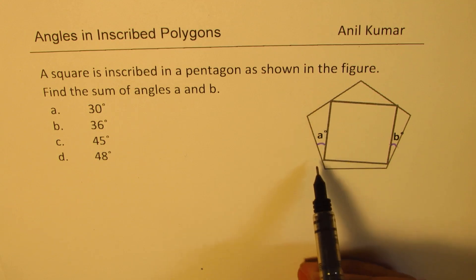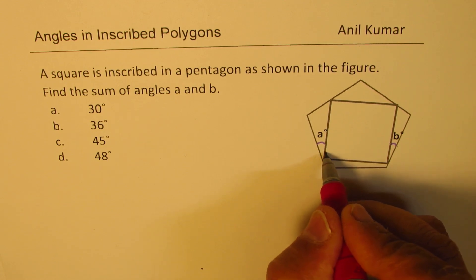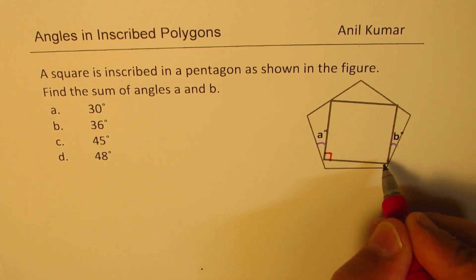Now to begin with, let's work with the square. As you know, a square will always have right angles inside. So the interior angles of a square are always right angles.